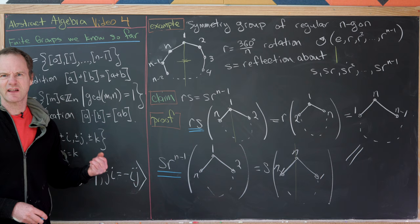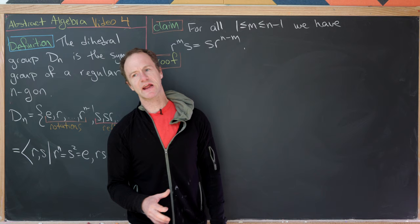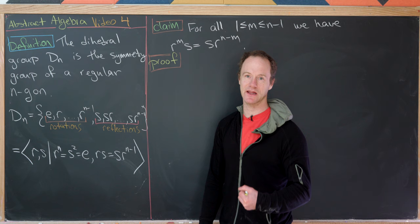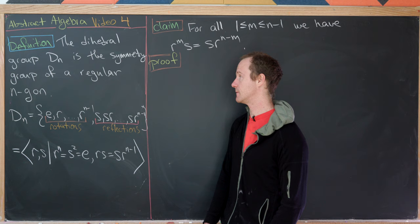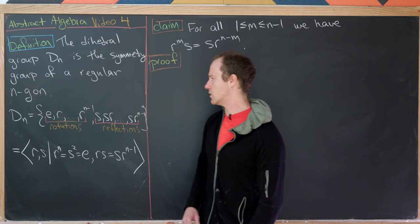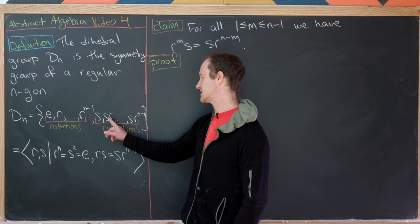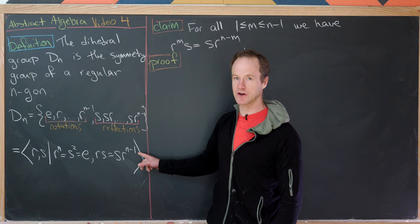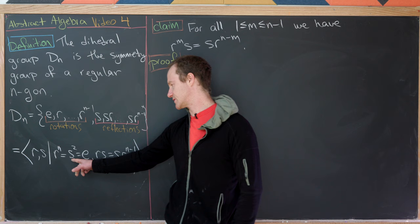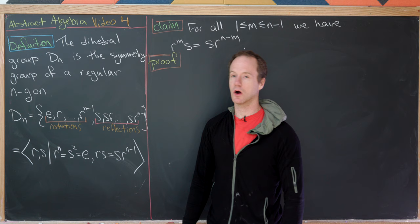This gives us the general dihedral group definition. Dn is the symmetry group of a regular n-gon, of order 2n, consisting of n rotations — e, r, r², up to r^(n−1) — and n reflections — s, sr, up to sr^(n−1). In generators and relations form: Dn = ⟨r, s | r^n = s² = e, rs = sr^(n−1)⟩.